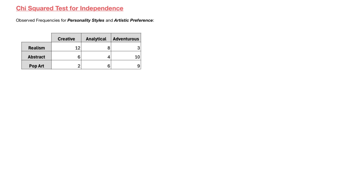When running a chi-square test for independence, the first thing we should always do is state the null hypothesis as well as the alternative hypothesis. I'll write H₀ for the null hypothesis. Here we're interested in determining whether the two categorical variables, personality styles and artistic preference, are independent or associated. When doing a chi-square test for independence, our null hypothesis will always be that the two categorical variables are independent. So in this case, our null hypothesis is that personality styles and artistic preference are independent.